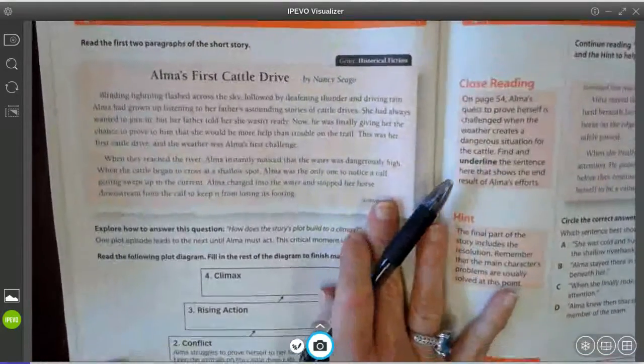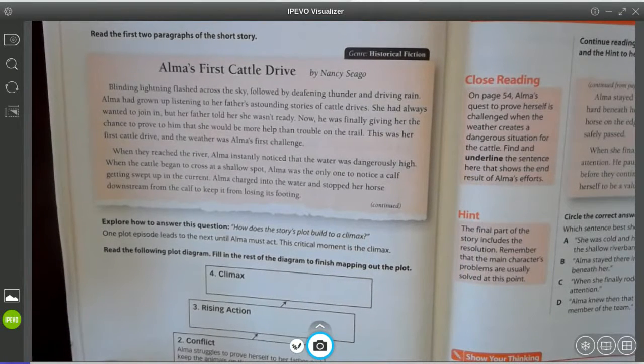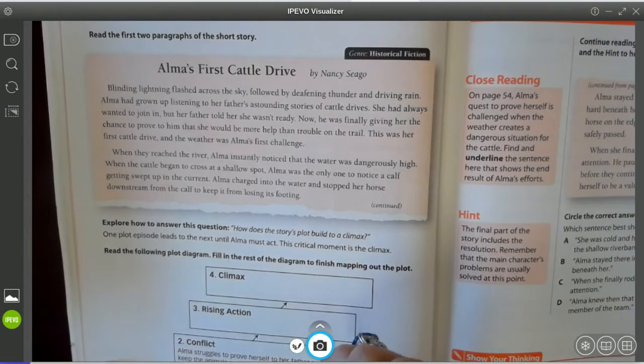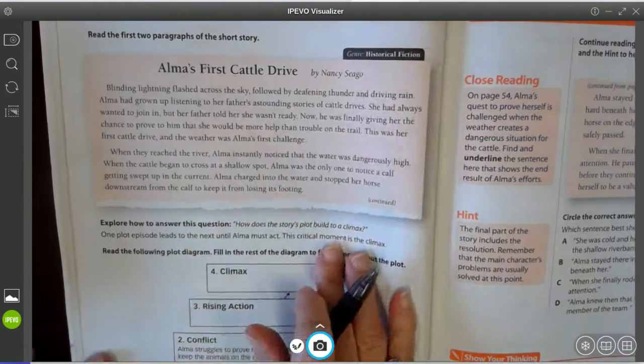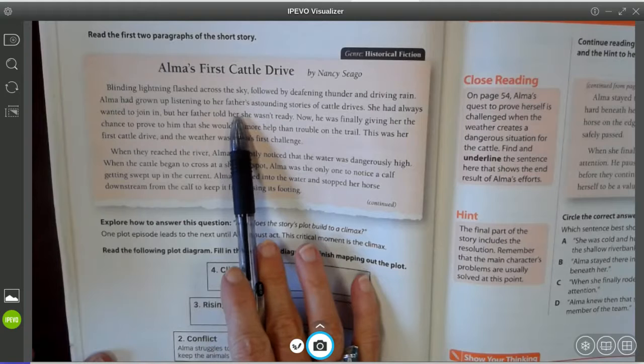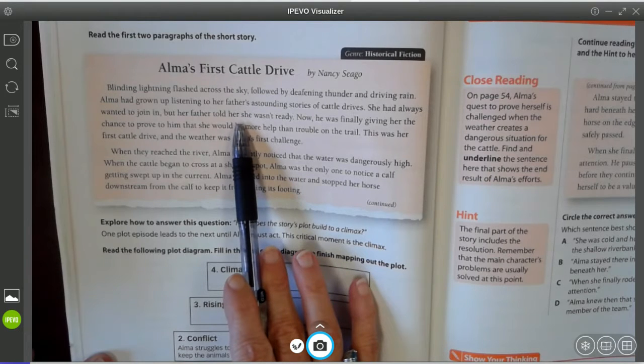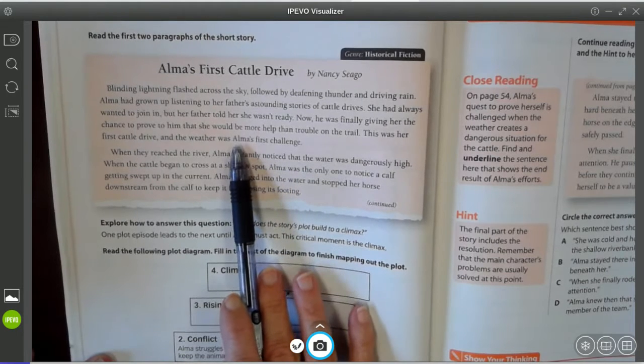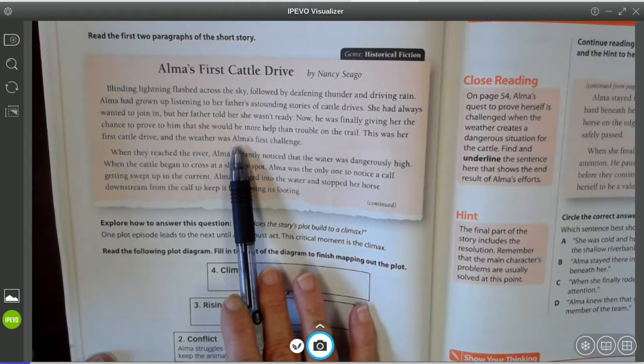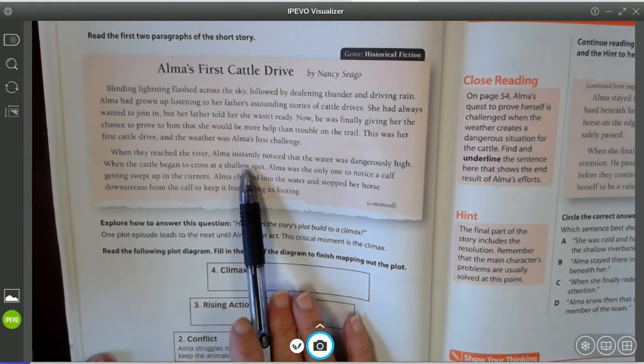All right. So let's take a look at a story and let's try to describe the plot in terms of exposition, conflict, rising action and climax using this part of the story. Alma's first cattle drive by Nancy Siego. Blinding lightning flashed across the sky, followed by deafening thunder and driving rain. Alma had grown up listening to her father's astounding stories of cattle drives. She had always wanted to join in, but her father told her she wasn't ready. Now he was finally giving her the chance to prove to him that she would be more help than trouble on the trail. This was her first cattle drive and the weather was Alma's first challenge.